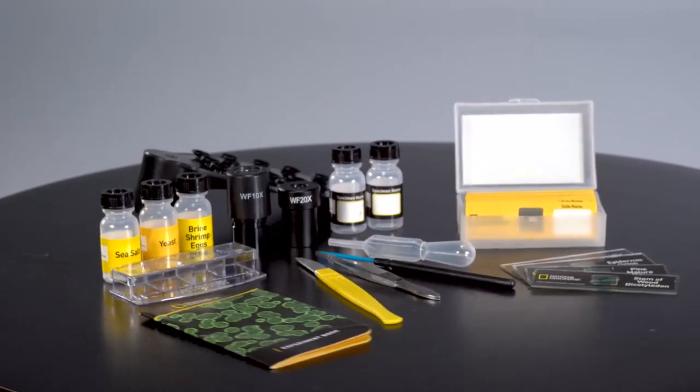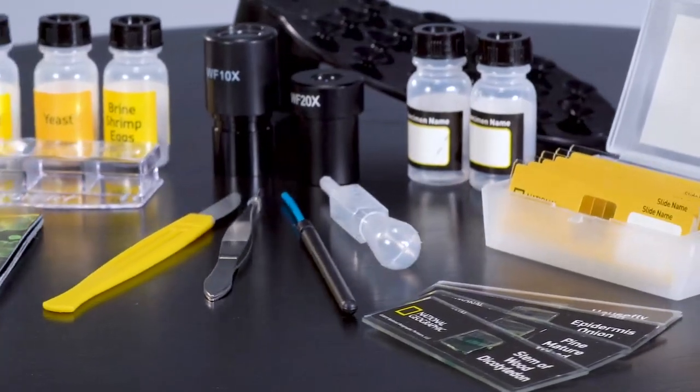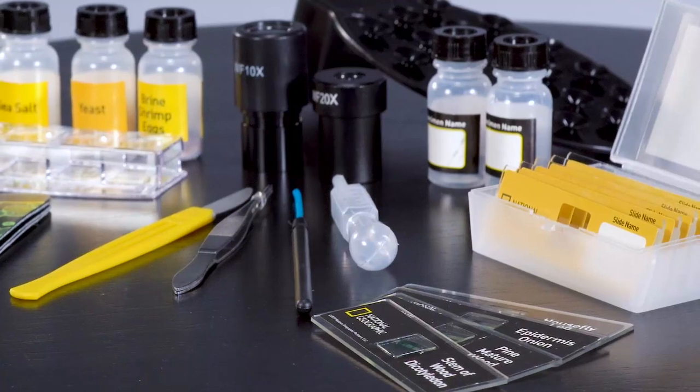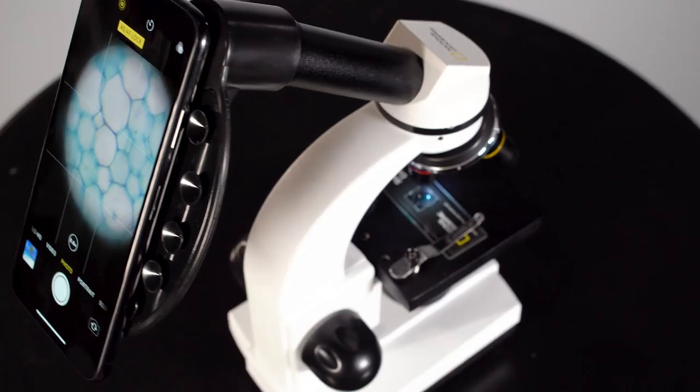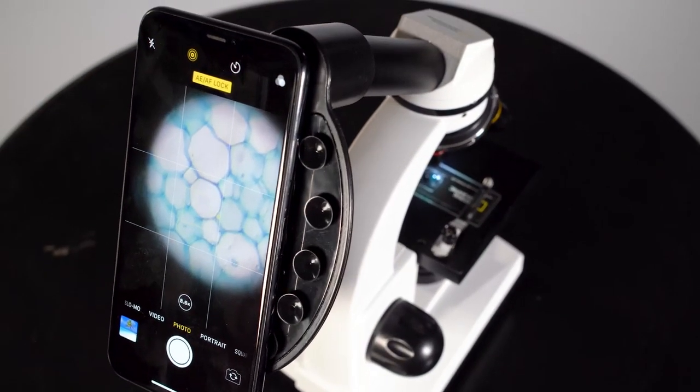You can start investigating right away with the full accessory kit that includes collection and preparation tools, prepared and blank slides, a shrimp hatchery, and an easy-to-use cell phone adapter for on-the-go exploration.